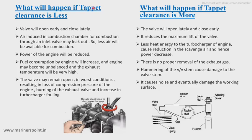When the tappet clearance is less, the air induced in the combustion chamber through the inlet valve may leak out, so less air will be available for combustion and engine performance will suffer. Fuel consumption will also increase because for the same output you will have to burn more fuel. Other adverse effects include loss of compression pressure, burning of the exhaust valve, and increased turbocharger fouling.